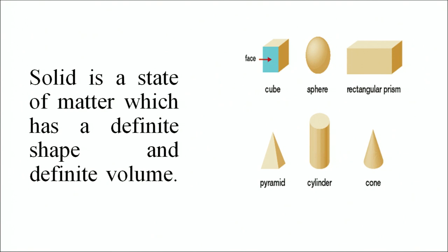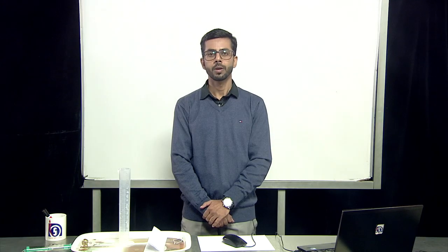To make this clearer, we have shown diagrams with different shapes: a cube, sphere, rectangular prism, pyramid, cylinder, and cone. All these shapes have a definite shape as well as a definite volume.